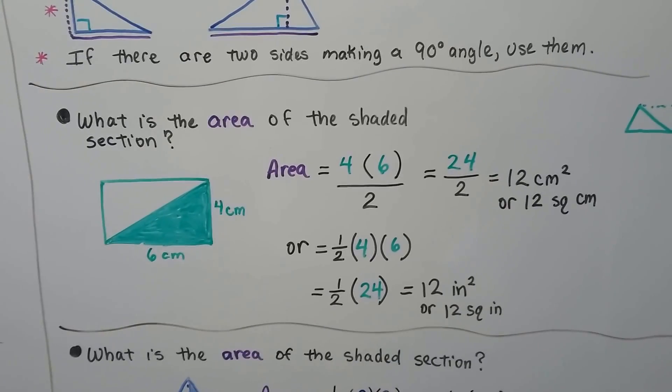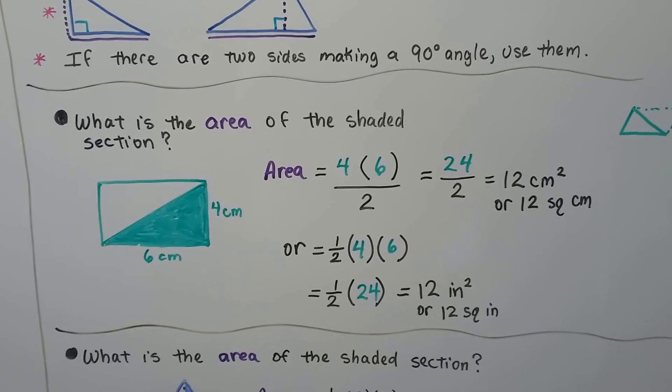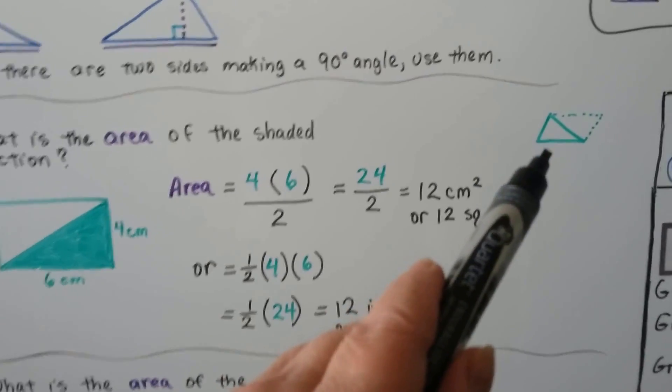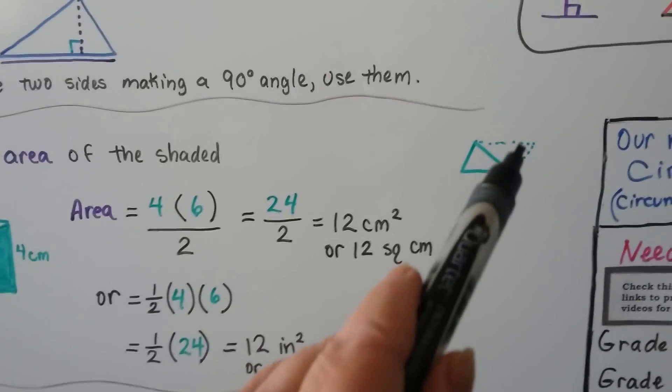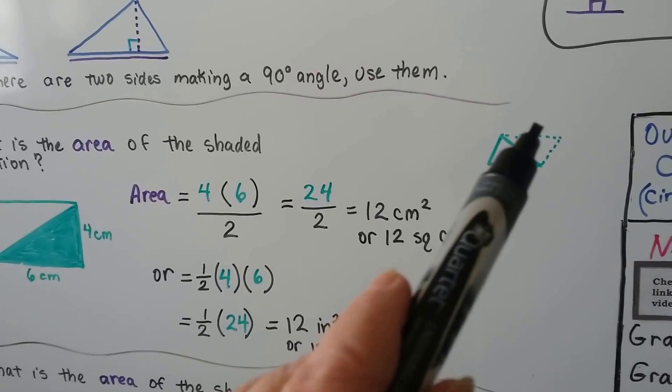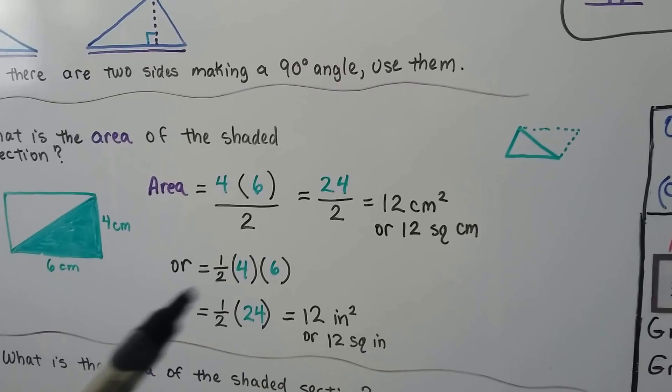Half times 24 is 12 inches squared or 12 square inches. And it doesn't matter what shape the triangle is because if we laid an identical congruent triangle next to it, it would make a parallelogram. So it's half of that parallelogram. So it's half base times height.